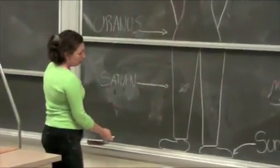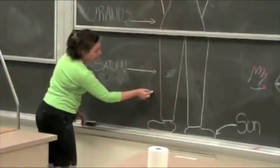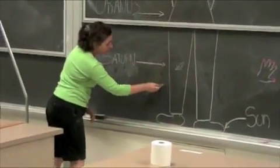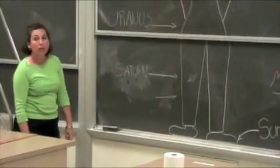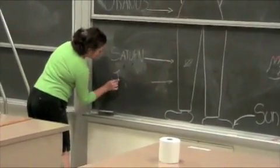Now between Saturn and the sun, if we were to divide it again, what would we have there? Jupiter. Jupiter goes here. Jupiter.